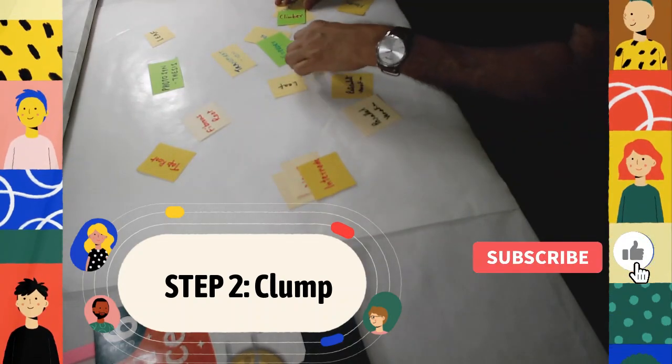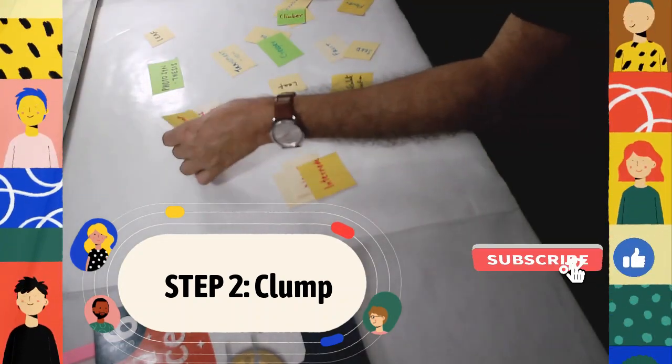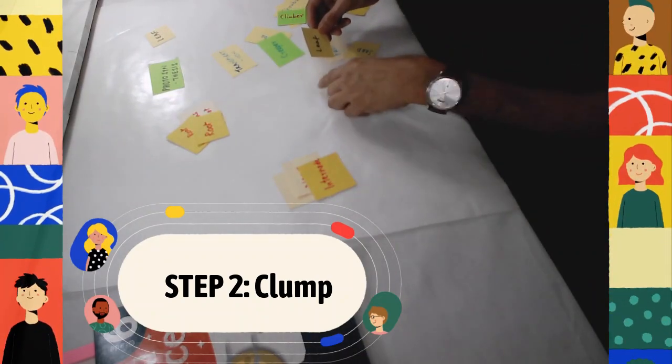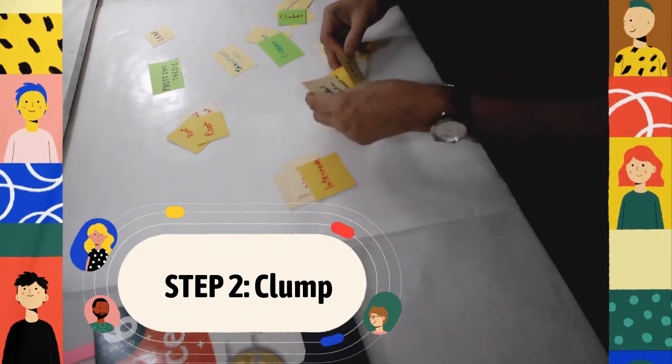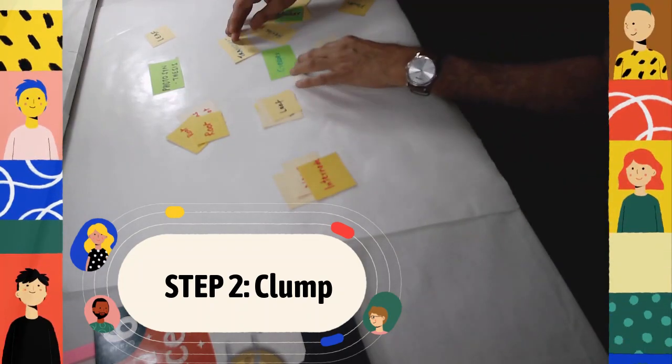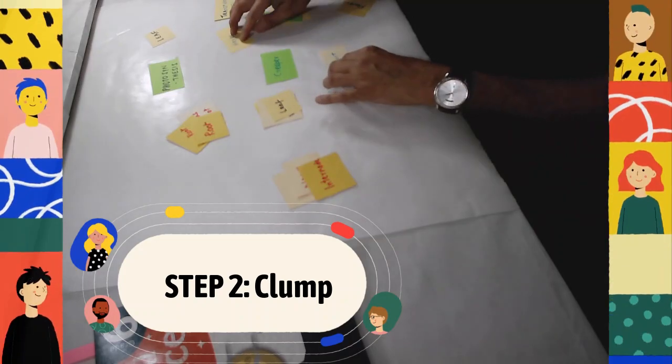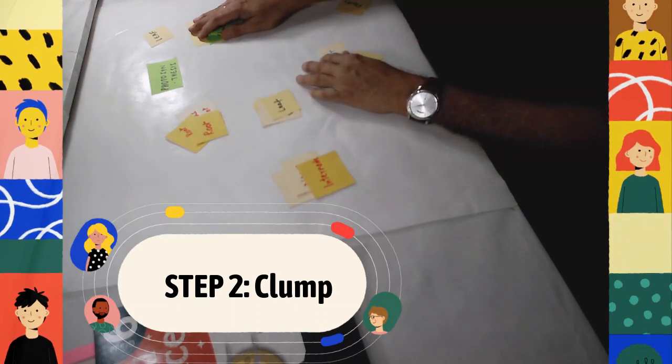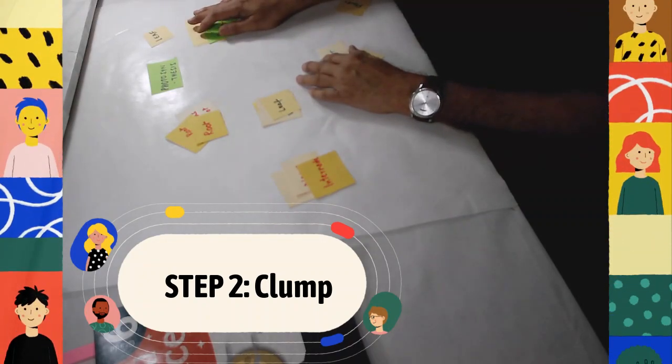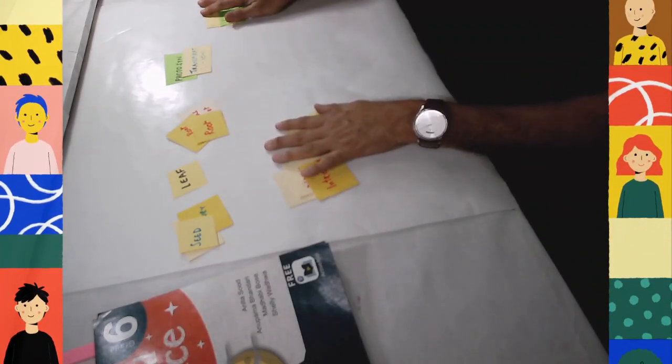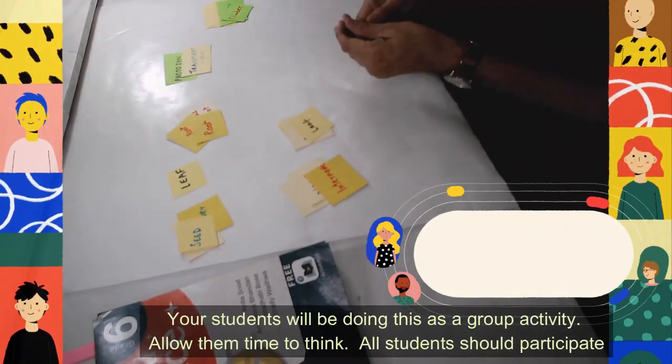Root is related with fibrous root, tap root. Leaf is related with venation, parallel, reticulate. So they can come together. The types of plants—herbs, shrubs, tree, creeper, climber—they can be clumped together according to their structure of the stem. So these are different clumps. So what we can do is we can write...